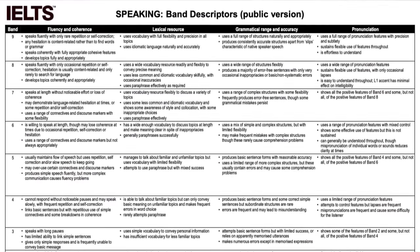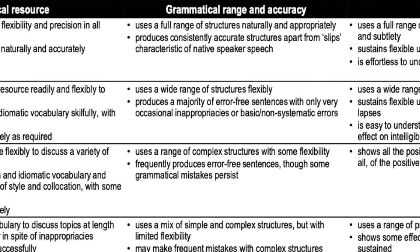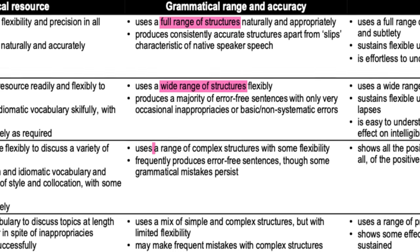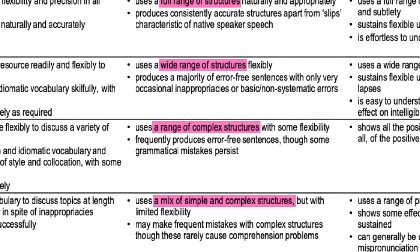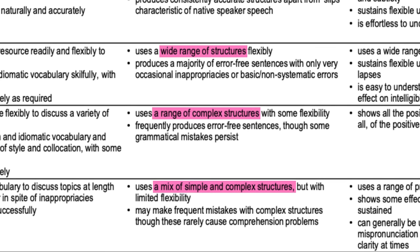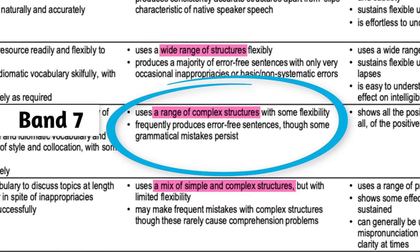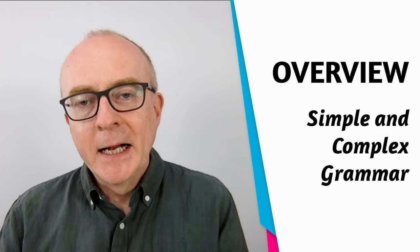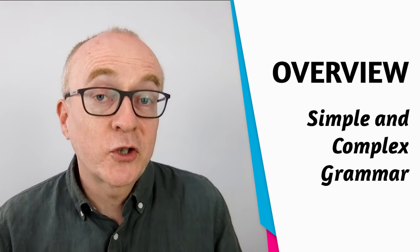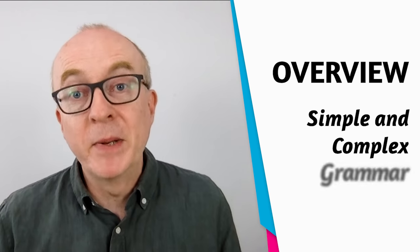The band descriptors for grammar in IELTS speaking talk about simple and complex grammar. It says over here for a band 7: uses a range of complex structures with some flexibility. So in today's video, I'm going to give you an overview of both simple and complex grammar so that you can start to slowly build up your ability to make complex sentences.